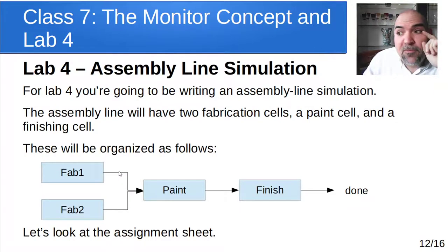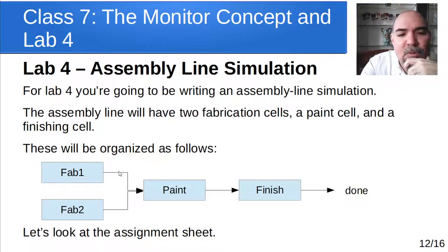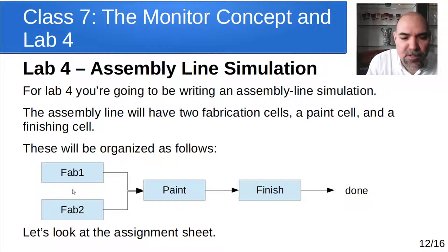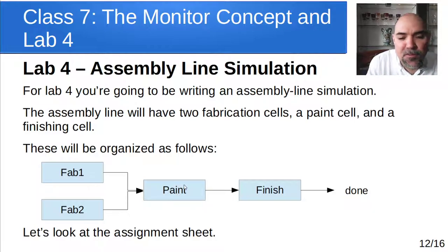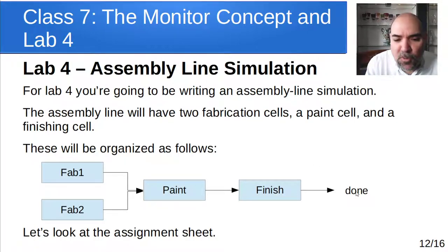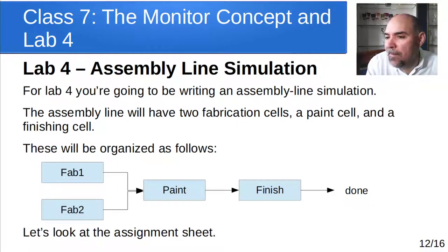Now for lab four — let's take a look at that and then I'll turn you loose on working on it today. Lab four is creating an assembly line simulation program. That assembly line is going to have two fabrication cells running as threads, and those are going to put things into a paint buffer. We have essentially two production lines making things and sending them to this station to be stored in the paint buffer. When they're pulled out of the paint buffer, they move to the finishing buffer, and then they move out to done. So let me pull up the assignment sheet here.